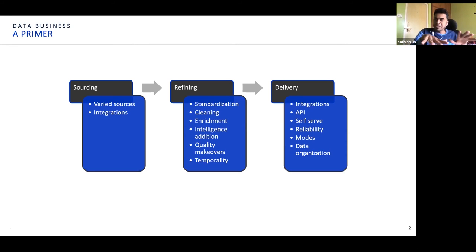This is something very similar to what happens in the crude oil industry, and it's intended to be so. Data business more or less happens in these three major pillars: sourcing, refining the data or curating the data sets, and delivery.